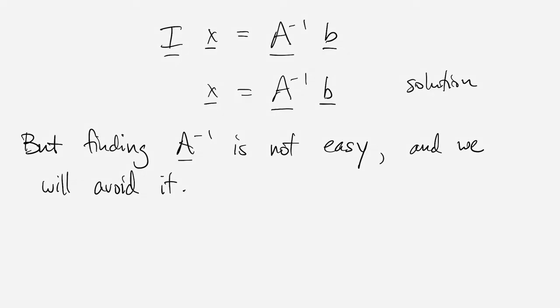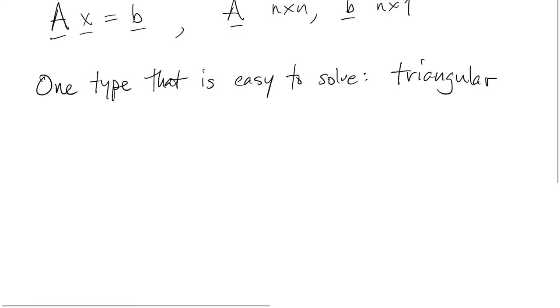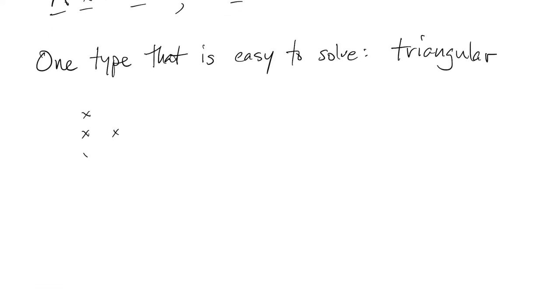So we need something else to solve linear systems. There is one type of linear system that is easy to solve, and that's what we call a triangular system of equations. So triangular can refer to the system, or it can refer to the matrix.